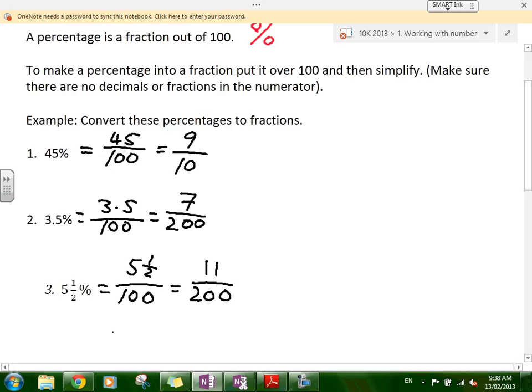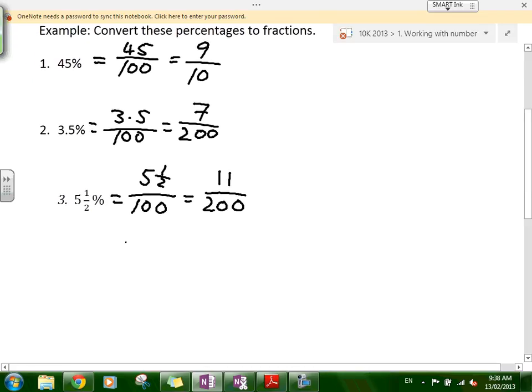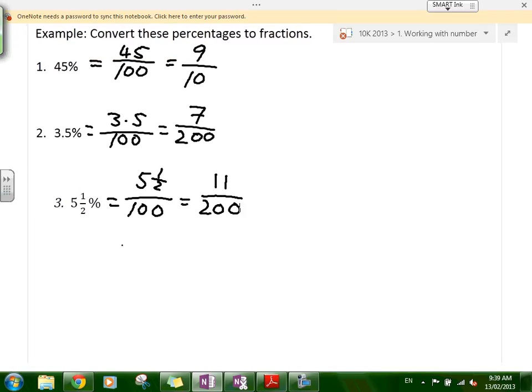Now the other thing we want to do is change percentages into decimals. To do that, all you have to do is divide by 100. When you divide a percentage by 100, you make it into a decimal. If a percentage is out of 100, then 100% is the total, the whole. When you talk about decimals, 1 is the whole, 1 is the total. So it goes from being out of 100 to being out of 1.